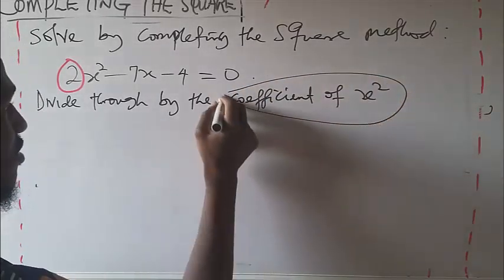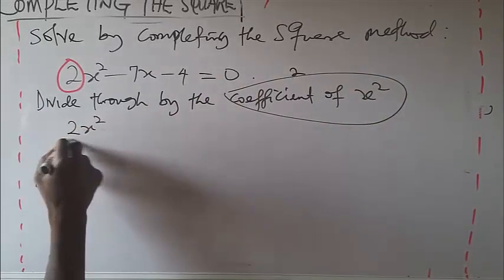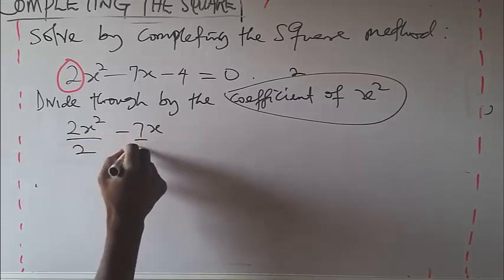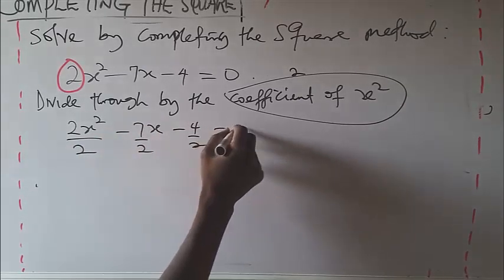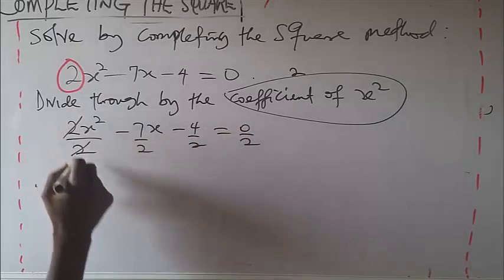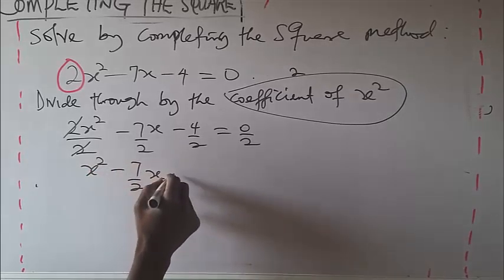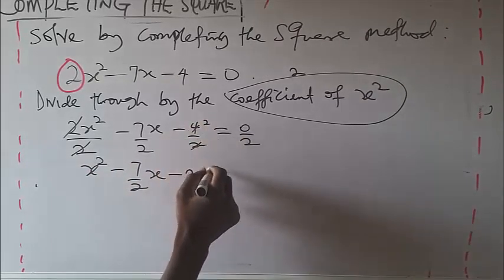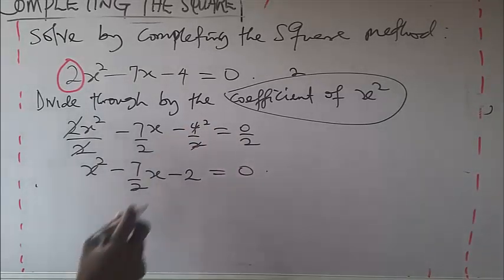The coefficient of x squared — divide through by 2. So you have 2x² divided by 2, minus 7x over 2, minus 4 over 2, equals 0. The 2 cancels, and you have x² minus 7/2 x minus 2 equals 0.